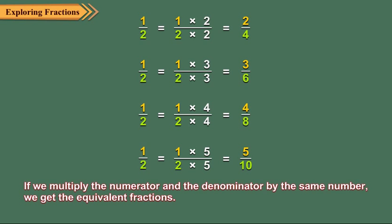Thus, if we multiply the numerator and denominator by the same number, we get the equivalent fractions.